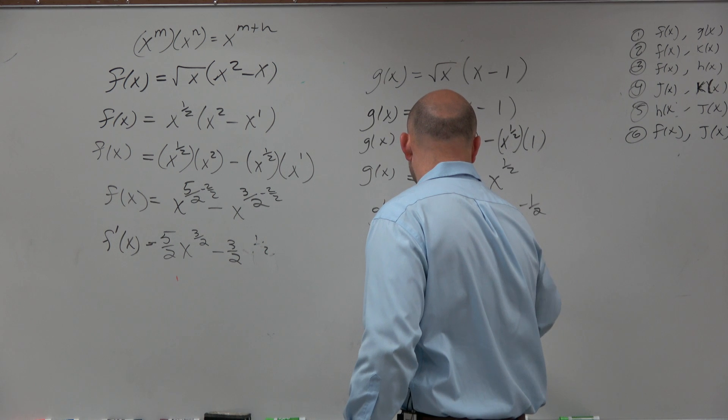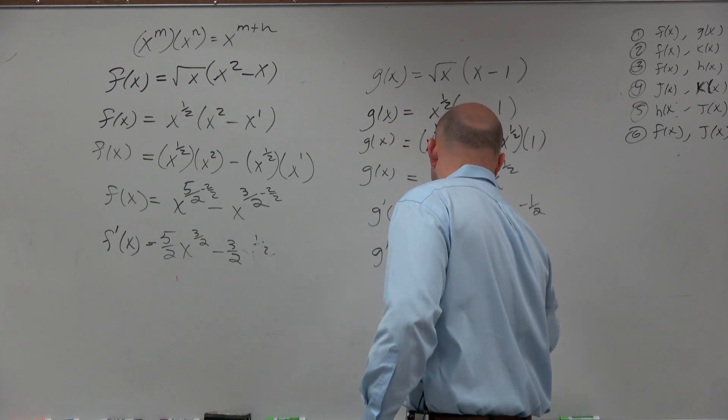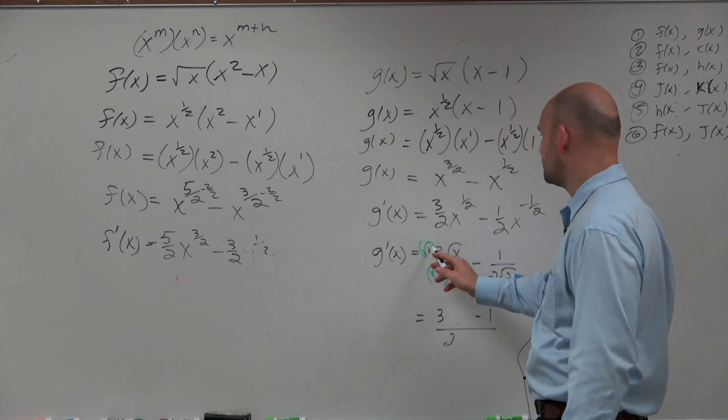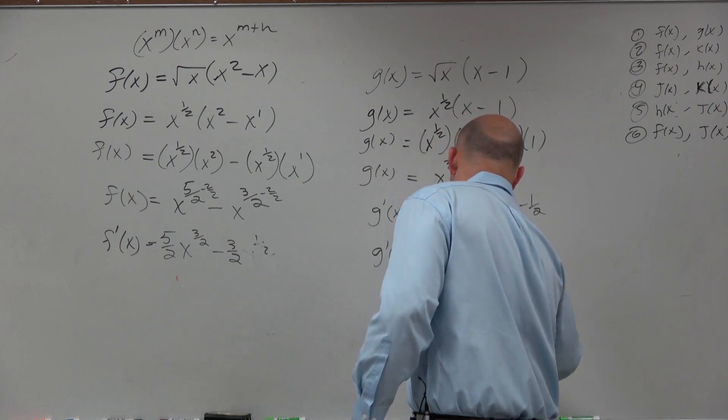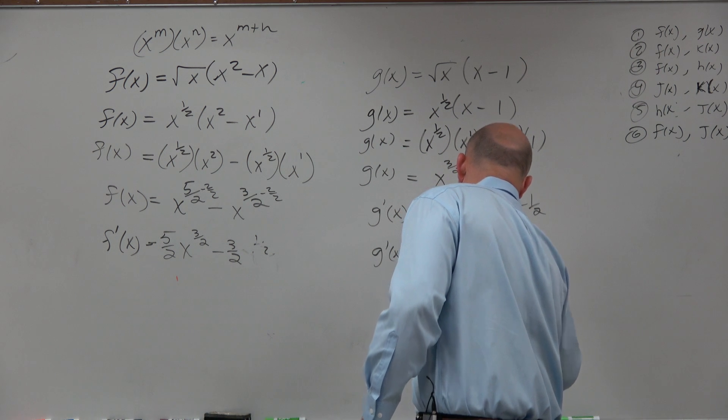Oh wait, why am I multiplying by square root of 2? That doesn't make any sense. So you multiply by the square root of x on the top and bottom. Square root of x times square root of x is just going to be x. So you'd be left with 3x minus 1 over 2 square root of x.